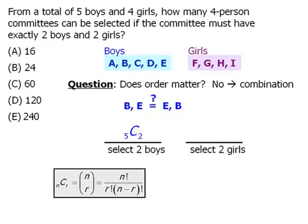Similarly, we have four girls, and we want to choose two of them. We can accomplish this in four choose two ways.